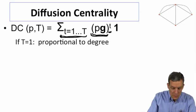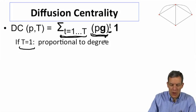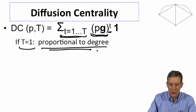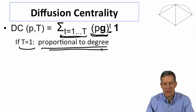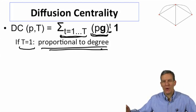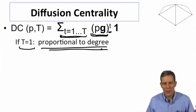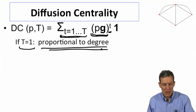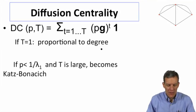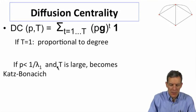So in situations where T is just equal to 1, then this becomes proportional to degree centrality. So it's just calculating how many people do I reach directly, and so it's just going to be proportional to degree.